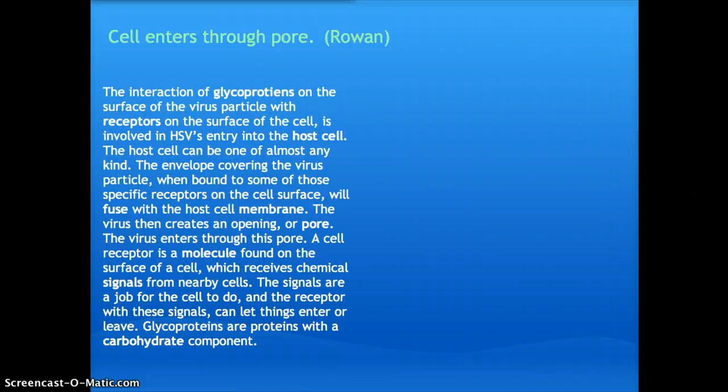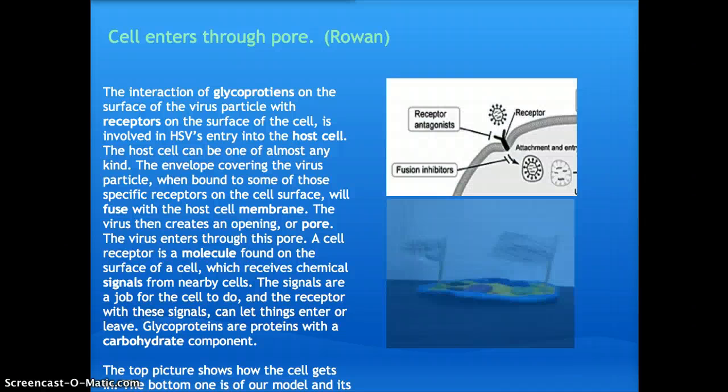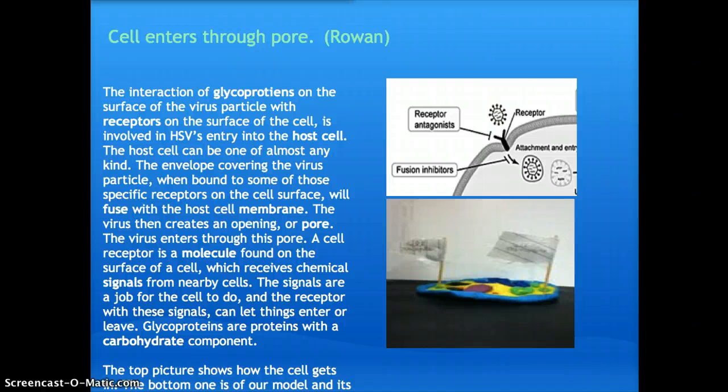The cell enters through the pore. The interaction of glycoproteins on the surface of the virus particle with receptors on the surface of the cell is involved in Herpes Simplex virus's entry into the cell. The host cell can be one of almost any kind. The envelope covering the virus particle, when bound to some of those specific receptors on the cell surface, will fuse with the host cell's membrane.